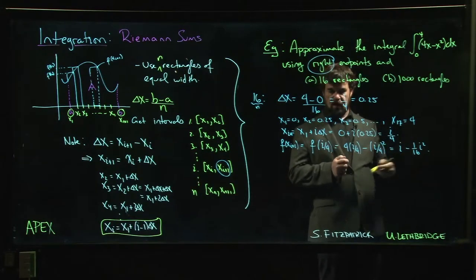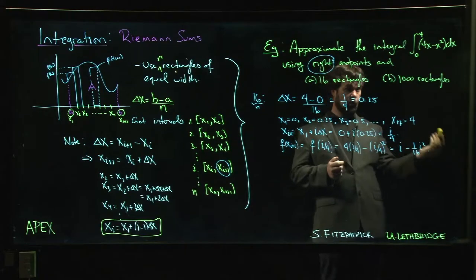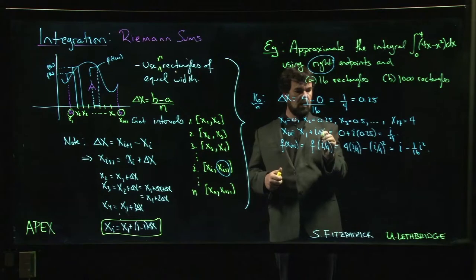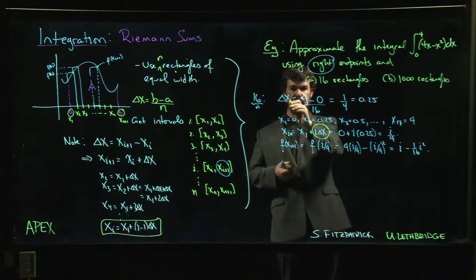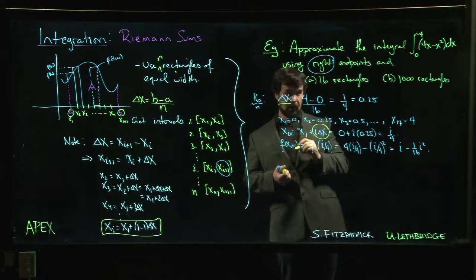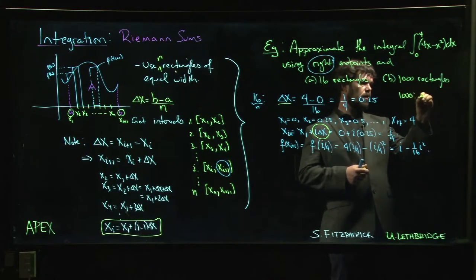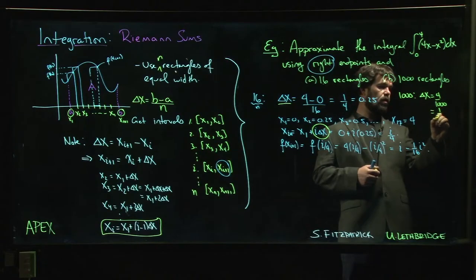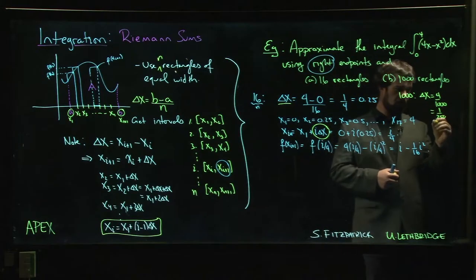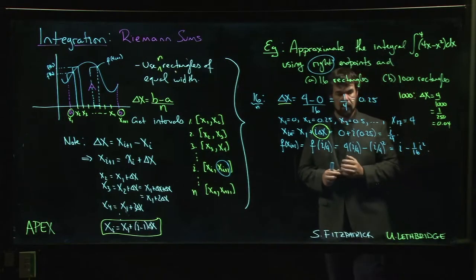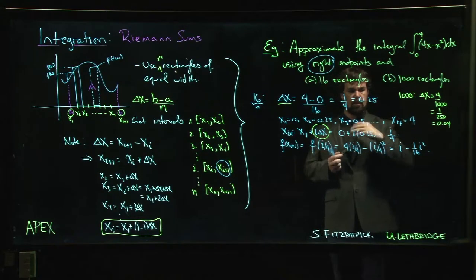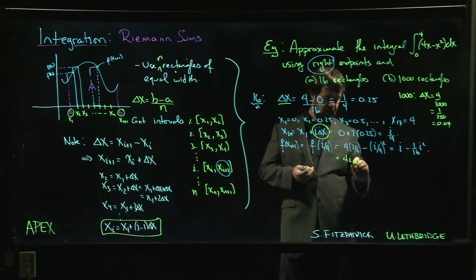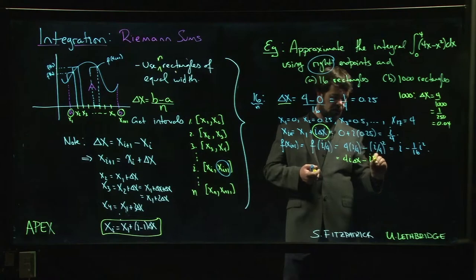Now, because we want to do this for 1000 rectangles, we might want to keep track of where that 16 is coming in, because we want to replace it by 1000. Really, the only thing we've got to control for is that x_{i+1} is still going to be i times delta x. The only thing that changes going from 16 rectangles to 1000 rectangles is delta x. For 1000 rectangles, delta x is going to be 4 over 1000, which is 1 over 250, or about 0.04. Maybe we want to write this in terms of delta x, so we have 4i delta x minus i squared times delta x squared.